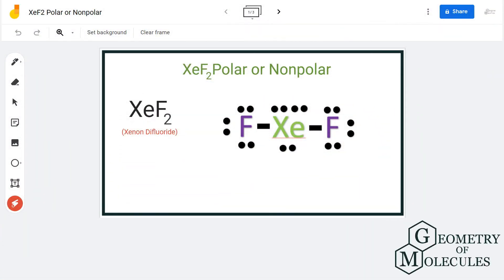Hi guys, today in this video we are going to determine the polarity for XeF2 molecule. It's a chemical formula for xenon difluoride and it is made up of one xenon atom and two fluorine atoms. So to understand the polarity of this molecule, we will first look at its Lewis structure.